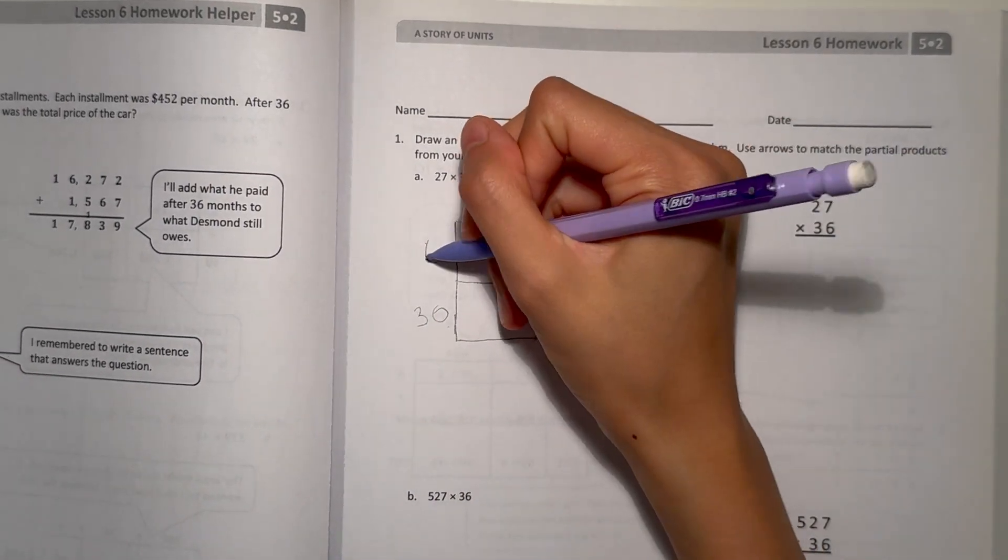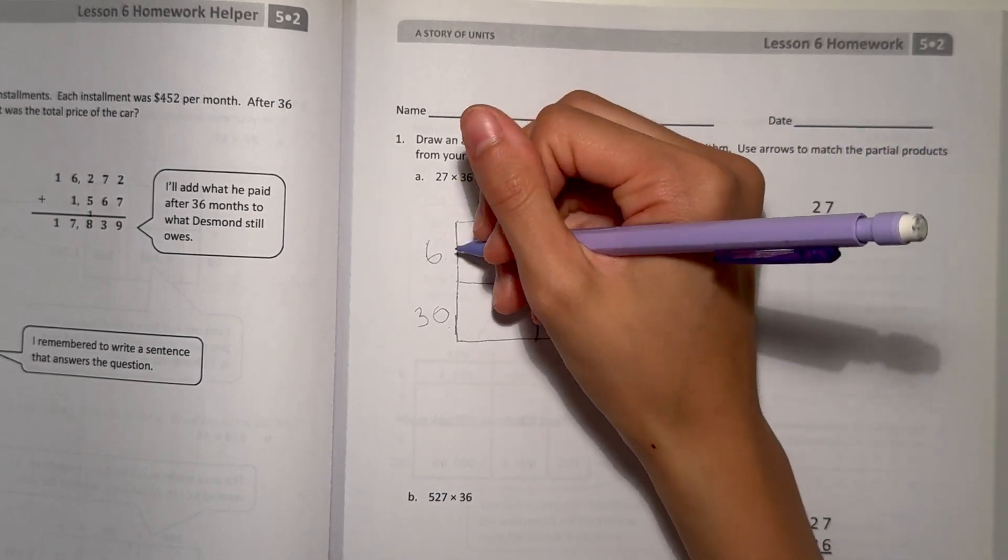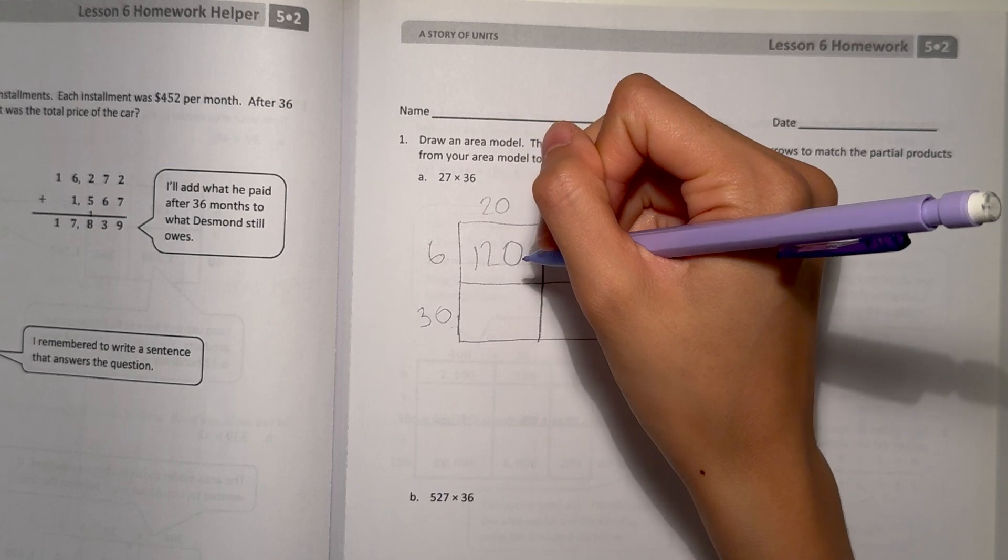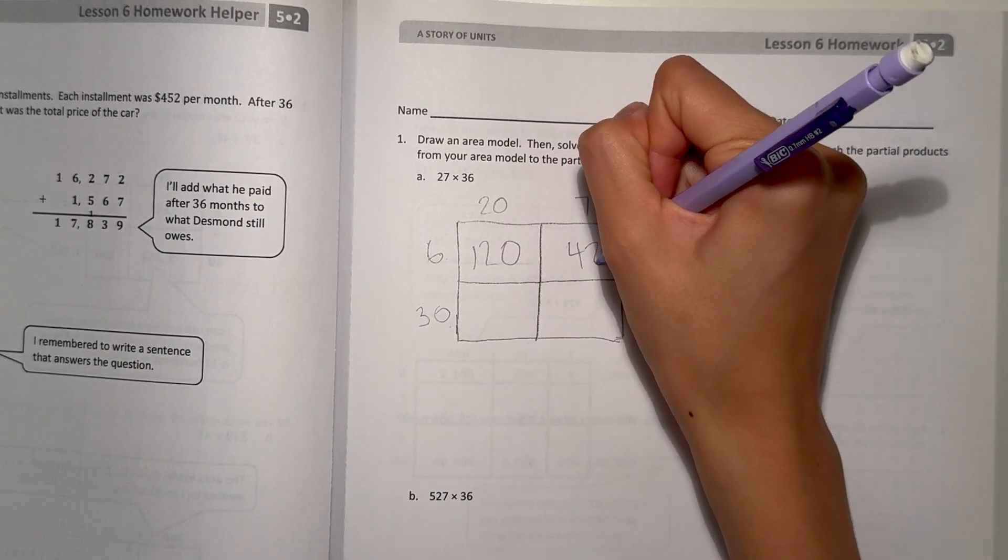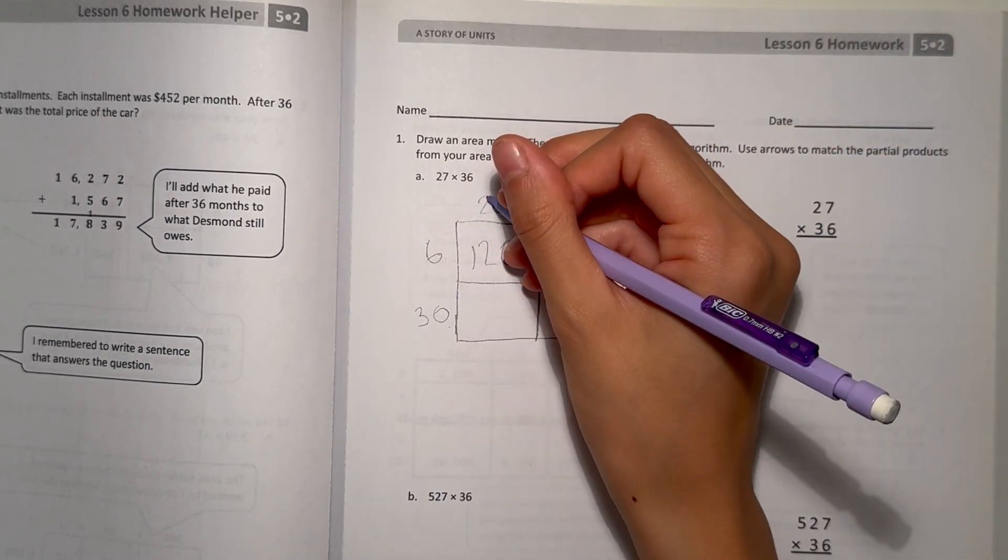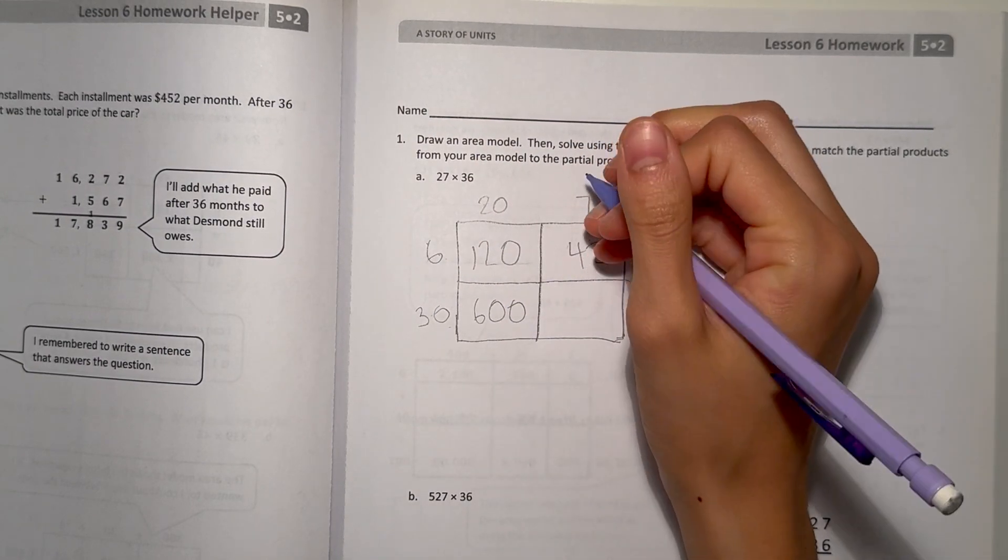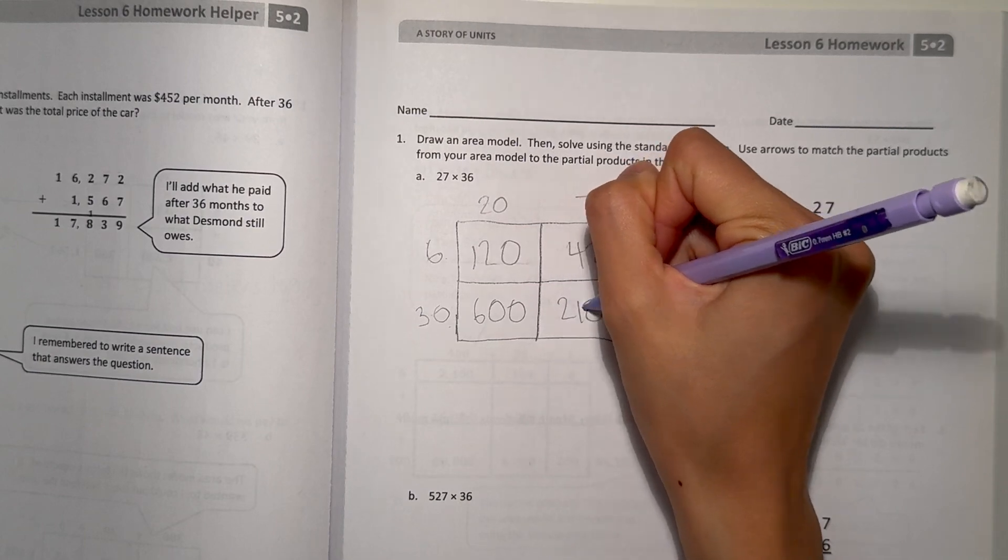So we multiply 6 times 20. 6 times 2 is 12 and add the 0. 6 times 7 is 42. 30 times 20. 3 times 2 is 6 and add the 0s. And 3 times 7 is 21 and add the 0 at the end.